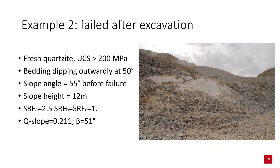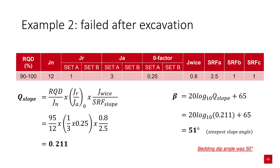Example 2 shows an excavation that failed shortly after excavation, in fresh quartzite with very high rock strength. A bedding plane is dipping outwardly at 50 degrees, and the slope angle prior to failure was 55 degrees. A Q-slope of 0.21 was obtained, corresponding to a beta angle of 51 degrees — effectively the orientation of the bedding plane. RQD was on average 95, joint set number was 12, joint roughness was 1, joint alteration 3, O-factor applied was 0.25 (causing failure if unsupported), J-wise of 0.8, and SRF based on physical condition of 2.5.